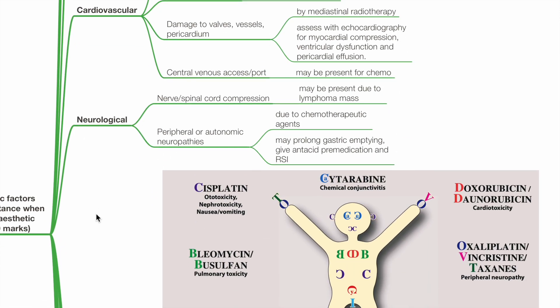Neurological: Nerve or spinal cord compression may be present due to a lymphoma mass. Peripheral or autonomic neuropathies may occur due to chemotherapeutic agents. There may be prolonged gastric emptying, necessitating an antacid premedication and rapid sequence induction.